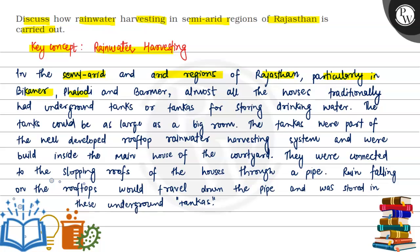Particularly in Bikaner, Phalodi, and Barmer, almost all the houses traditionally had underground tanks or tankas for storing drinking water. The tanks could be as large as a big room. The tankas were part of a well-developed rooftop rainwater harvesting system and were built inside the main house or the courtyard.